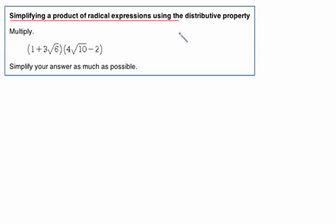Here we're taking a look at simplifying a product of radical expressions using the distributive property. Remember the distributive property? That's our FOIL method.